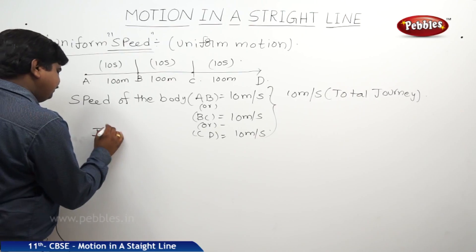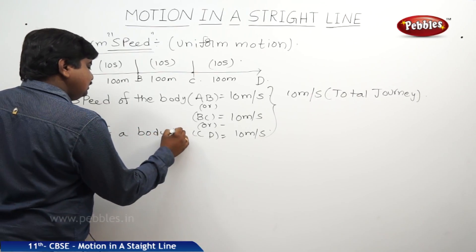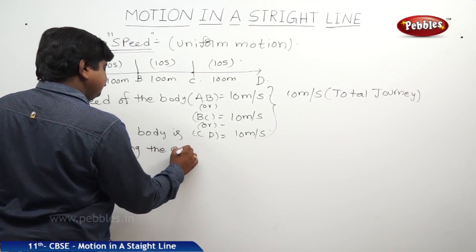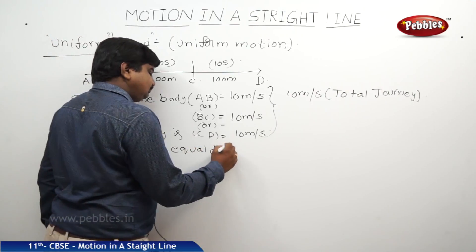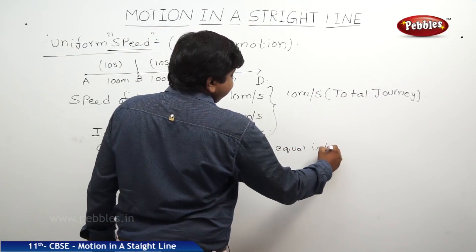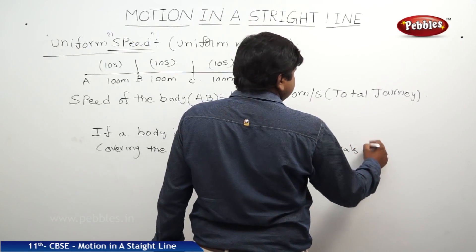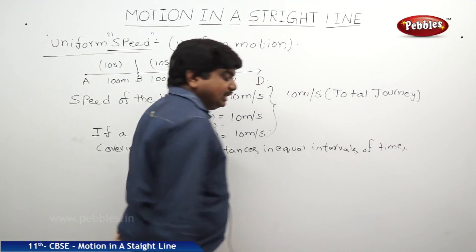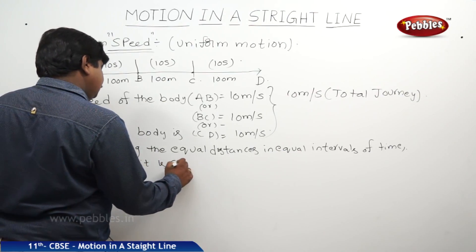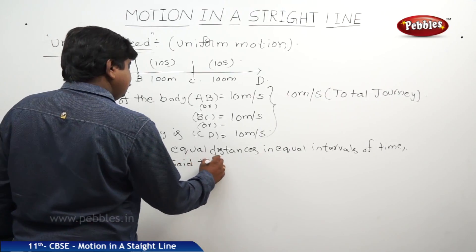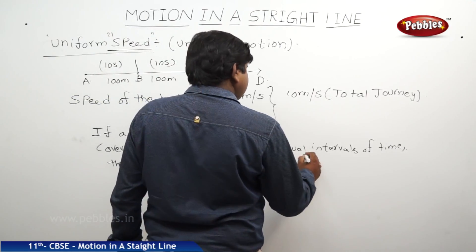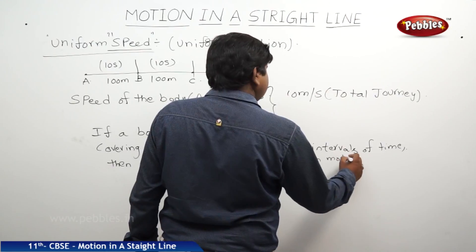So if a body is covering equal distances in equal intervals of time, then it is said to be executing uniform motion.